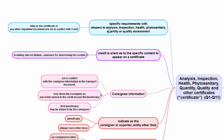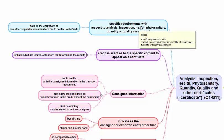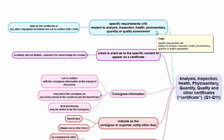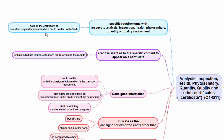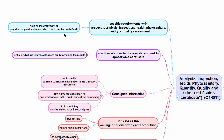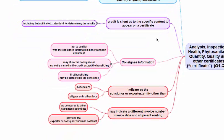If there is a specific requirement with respect to an analysis, inspection, phytosanitary or other certificate — if the credit states what the result of the analysis should be or how the inspection should be done — then the data on the certificate or any other stipulated document should not conflict with it. If the credit does not say anything about the analysis, then the analysis result — for example, how sweet sugar is — has no impact on the document examination.